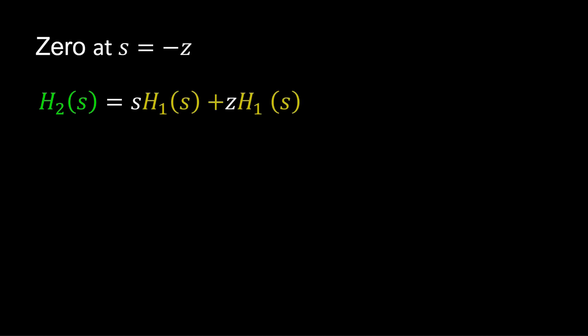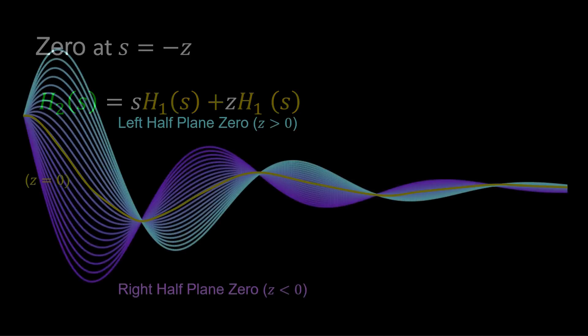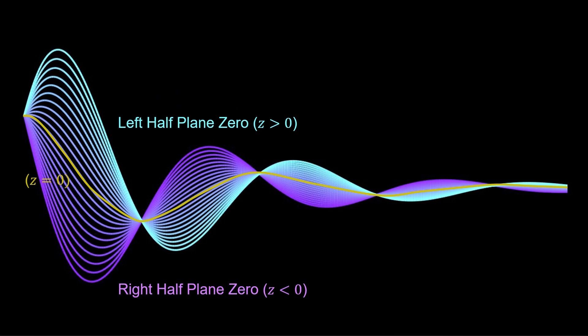And in between these extremes, A2 is the combination of H1 and its derivative. So, in the time domain, for Y2, we're looking at the linear combination of Y1 and its derivative.